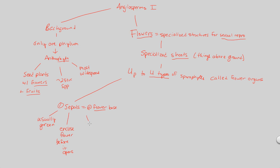The sepal encloses the flower before it opens. In addition, it's a sterile floral organ, meaning it is not directly involved in sexual reproduction. When we say sterile, we simply mean that the sepals don't produce any sperm or egg. Though they are part of a reproductive structure, this specific flower organ — this specific type of sporophyll — does not produce sperm and egg. Thus, we call it sterile.